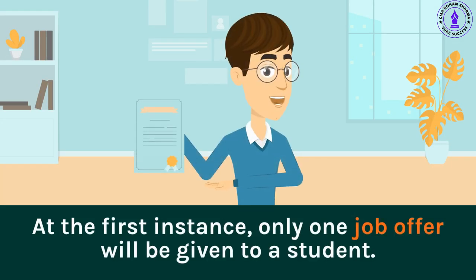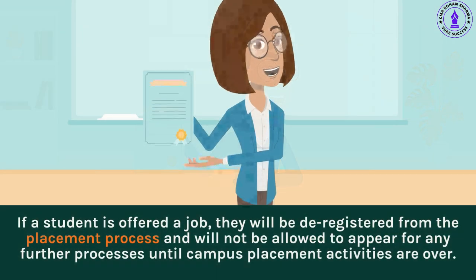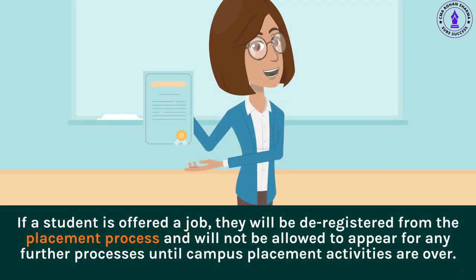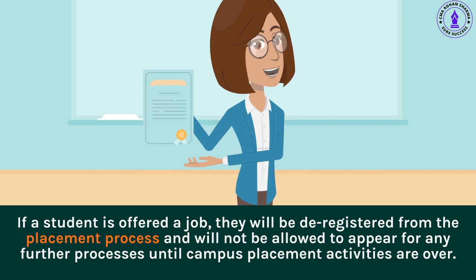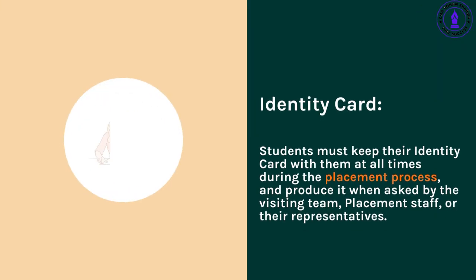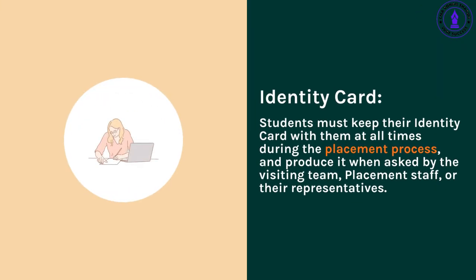One job per student: At the first instance, only one job offer will be given to a student. If a student is offered a job, they will be de-registered from the placement process and will not be allowed to appear for any further processes until campus placement activities are over.